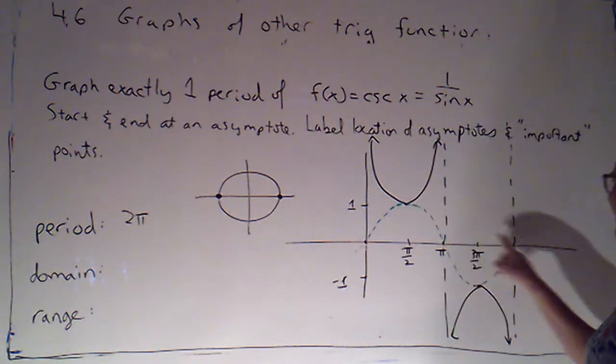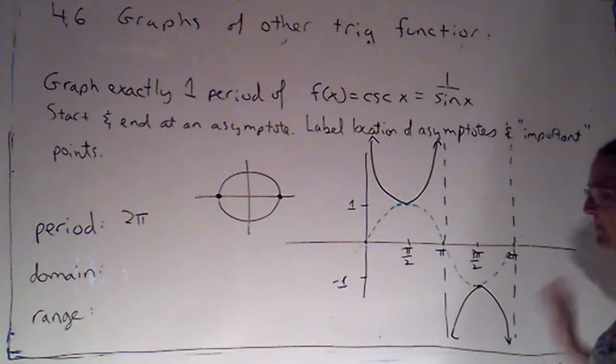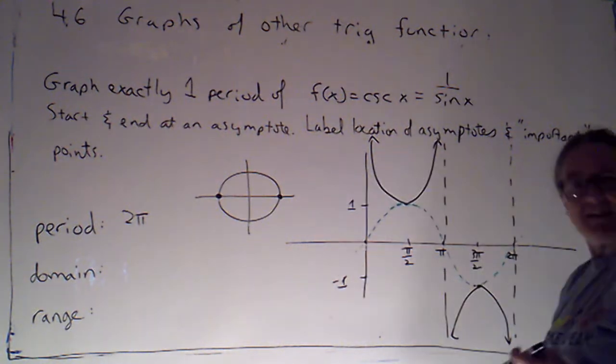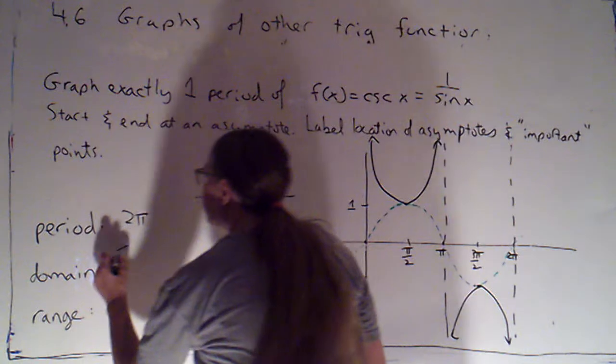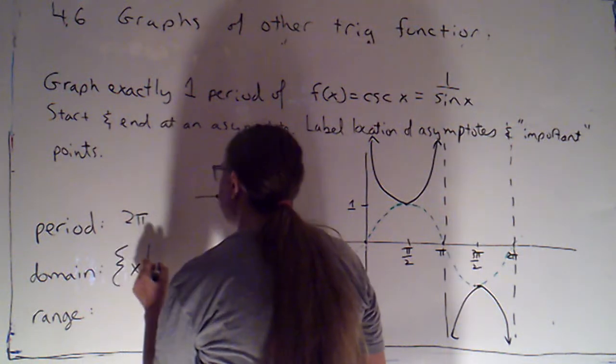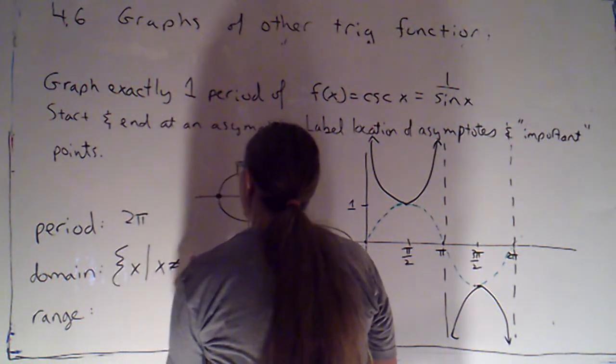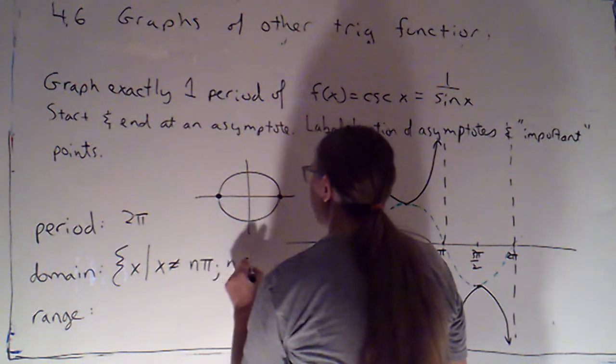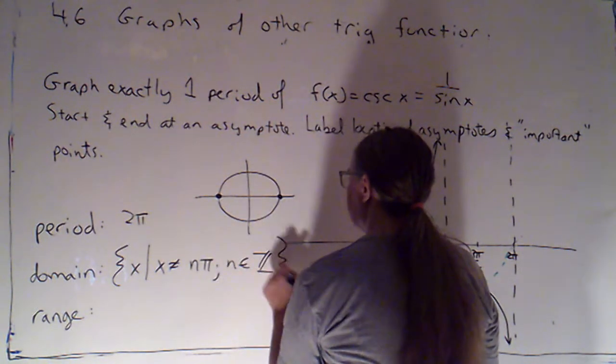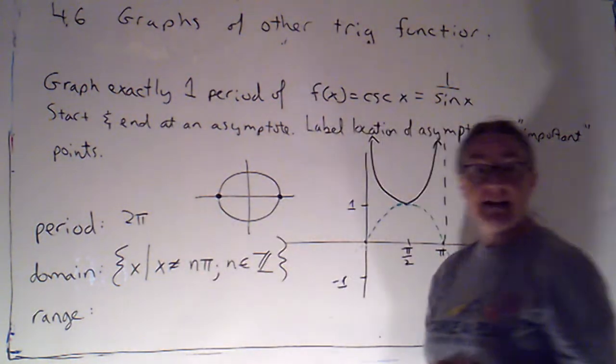That was zero pi, one pi, two pi, the next one's going to be at three pi. Over here I'd have one at negative pi. So my domain is all x such that x is not a multiple of pi, where don't forget to tell me that that n is representing an integer.